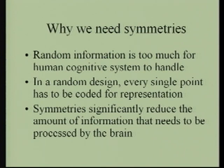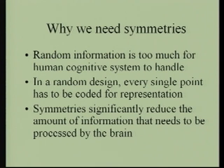Let me argue from a physiological basis why we need all these symmetries. Random information is too much for the human cognitive system to handle, and there's a very good reason for that, known to all computer scientists who deal with image compression. In a random design, you cannot compress the image because every single point has to be coded for representation. What happens when you have symmetries is that they significantly reduce the amount of information that needs to be processed.